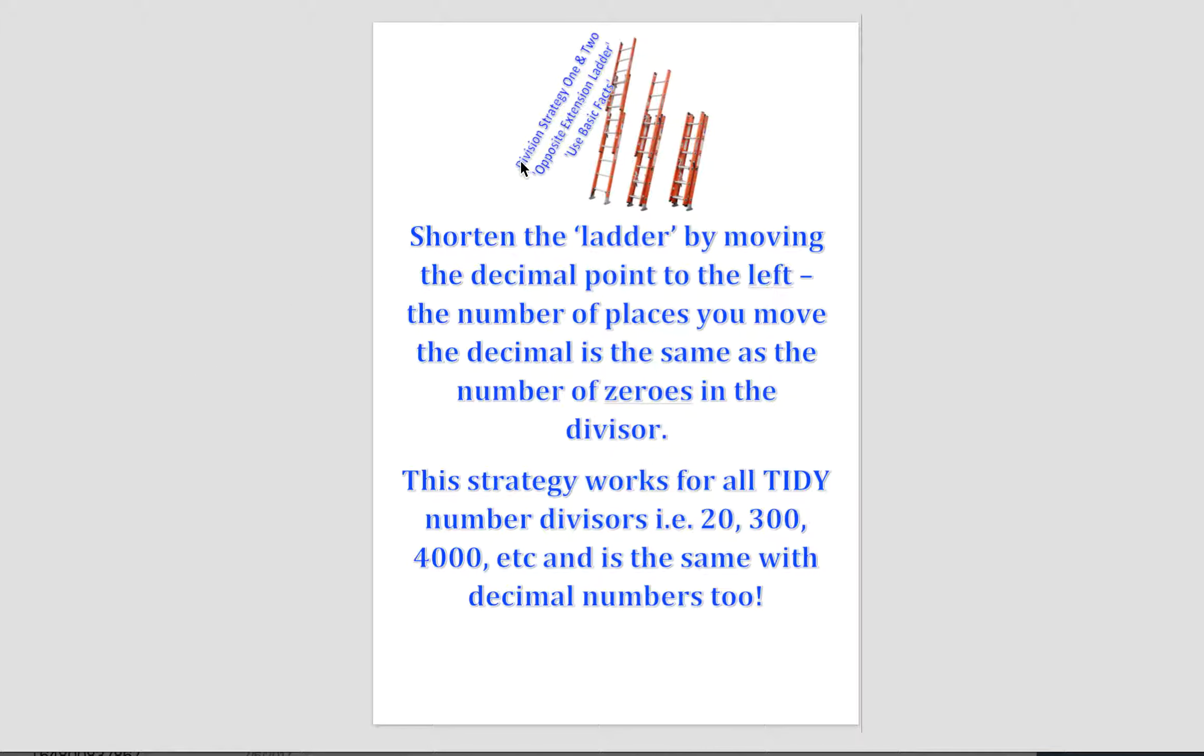Division strategy 1 and 2, the opposite extension ladder using basic facts. In this case, we're going to use our basic facts to do some divisions, and then we're going to use our opposite extension ladder by moving the decimal point to the left and shortening the ladder. The number of places we move the decimal is the same as the number of zeros in the divisor.